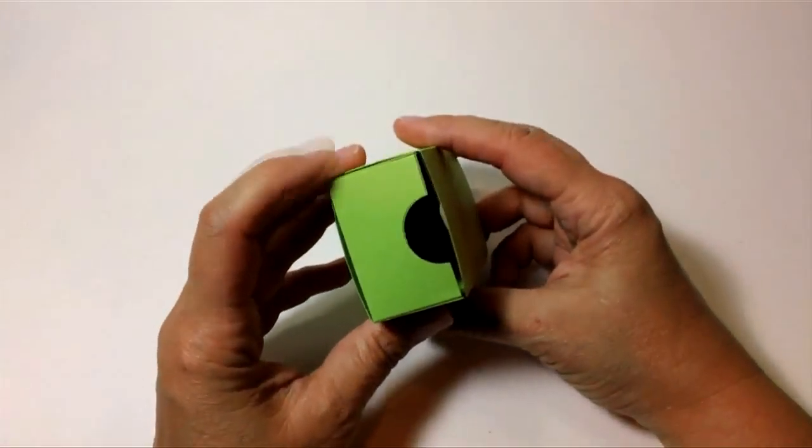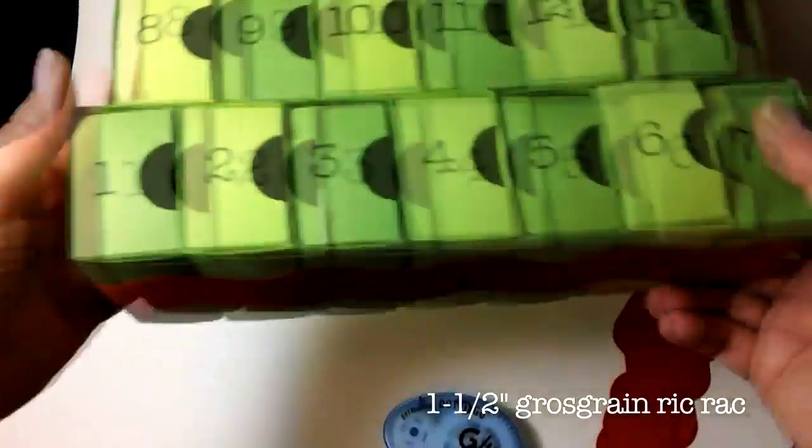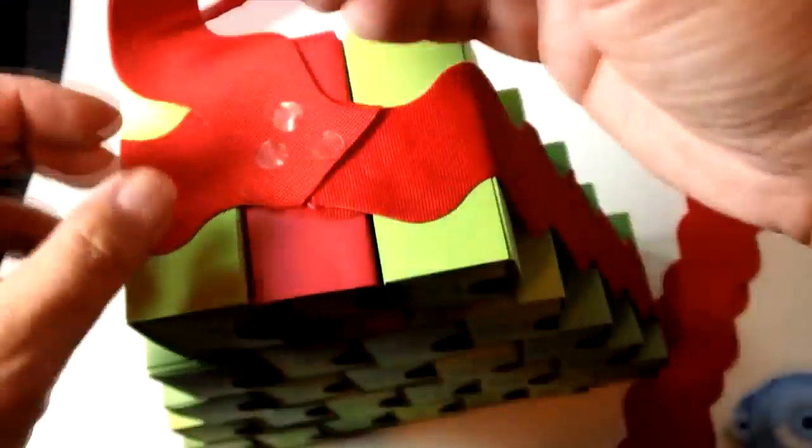Here's my assembled project. I have all of the boxes glued together with glue dots. There's some 1.5 inch grosgrain rickrack ribbon all the way around it, also adhered with glue dots.